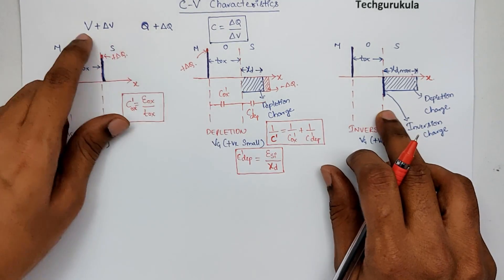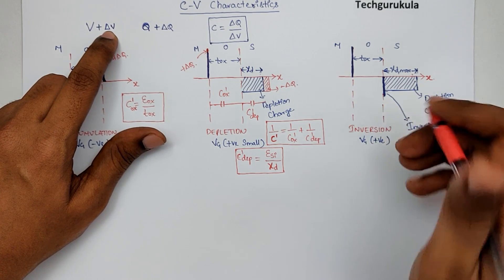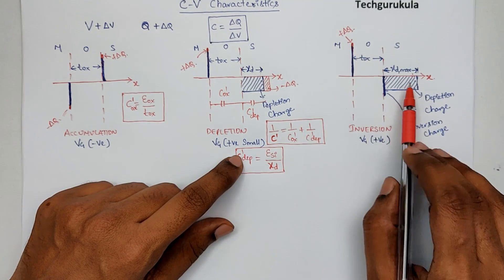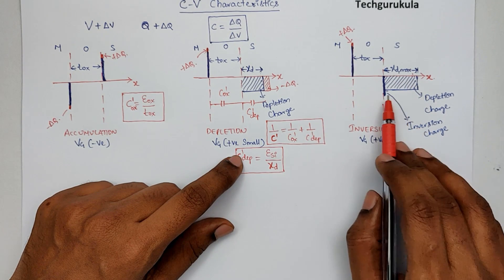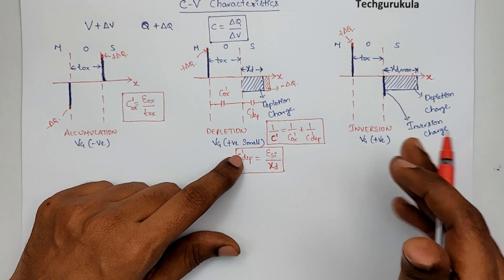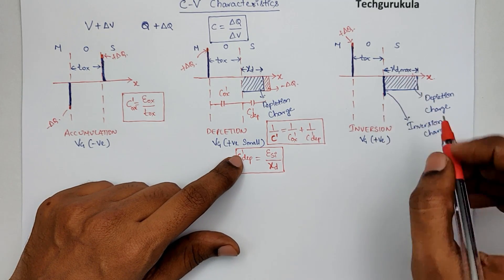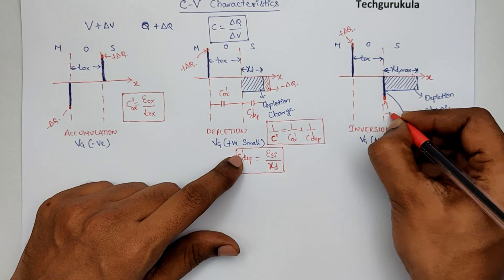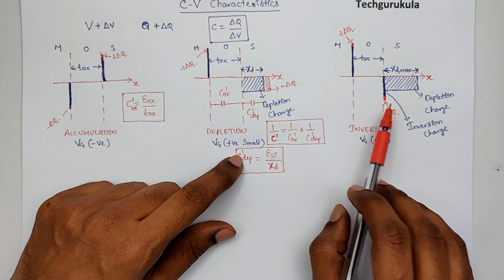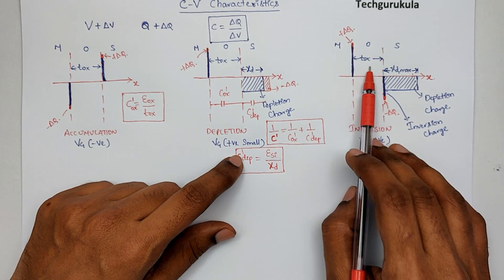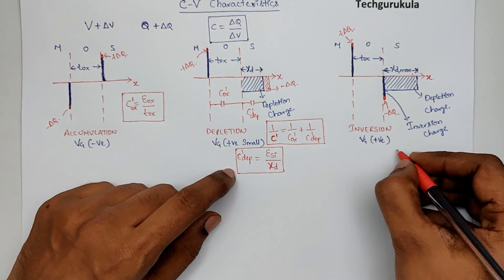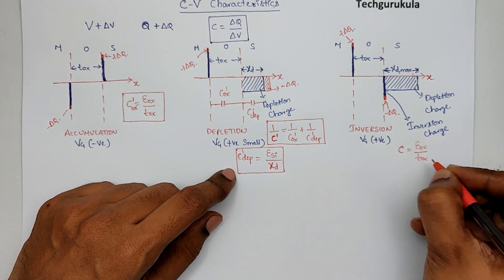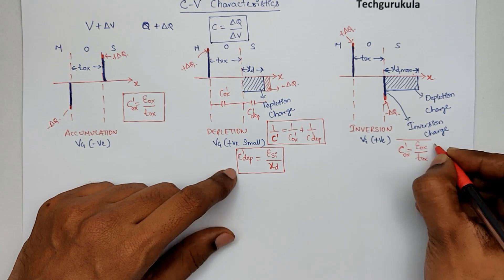When we come to inversion mode, when a capital V is applied and we apply a small delta V, we get plus delta Q on the metal. This time, the delta Q cannot be accommodated in the depletion region as we have discussed, because the depletion has reached its maximum depletion width. So this should be accommodated in the inversion region. The plus delta Q and minus delta Q are separated by T_ox, and this material has epsilon of epsilon_ox. So the capacitance in inversion mode equals epsilon_ox over T_ox, which is nothing but C_ox prime.